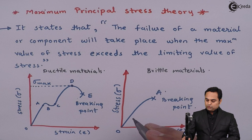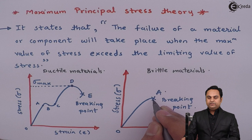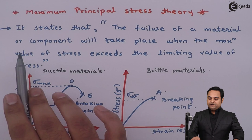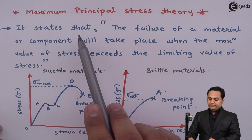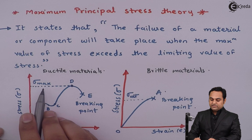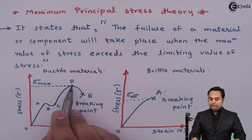Brittle material, as we know, fails without giving any prior warning. When we are increasing the stress value, the strain increases, and finally there is a point where the material breaks. At that point, the stress is called sigma ultimate, that is ultimate stress. The limiting value of stress here is the maximum stress.